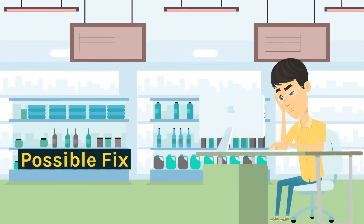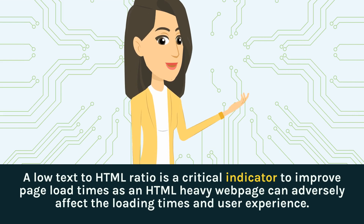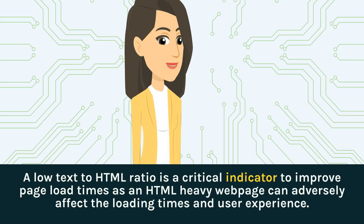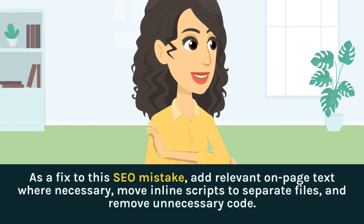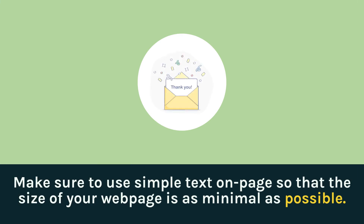As a possible fix, a low text to HTML ratio is a critical indicator to improve page load times, as an HTML-heavy web page can adversely affect loading times and user experience. To fix this SEO mistake, add relevant on-page text where necessary, move inline scripts to separate files, and remove unnecessary code. Make sure to use simple text on page so that the size of your web page is as minimal as possible.